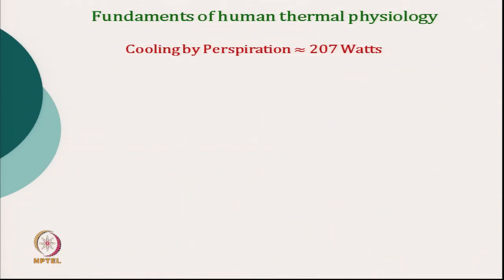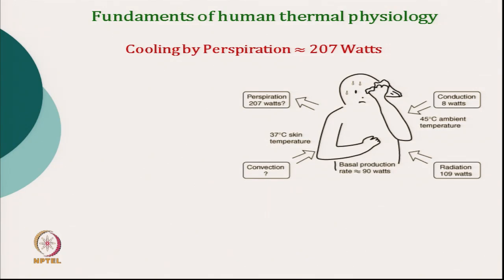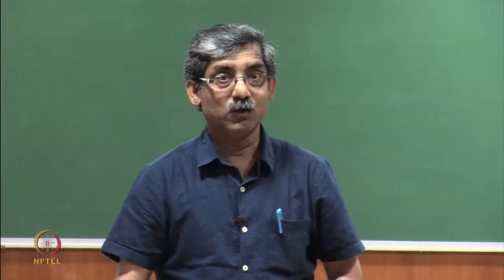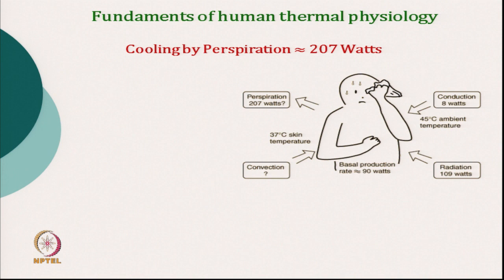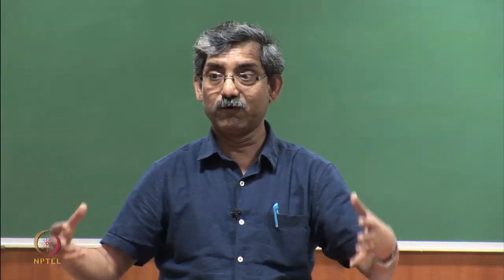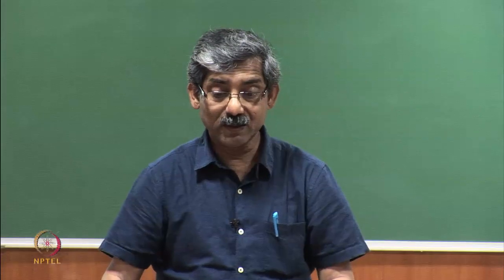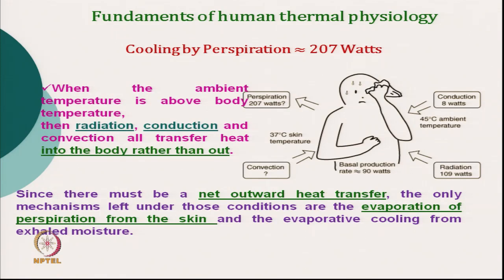After radiative heat, the main activity is cooling by perspiration. In the earlier case at room temperature of 23 degree Celsius, insensible perspiration is around 600 grams per day. But when temperature becomes 45 degree Celsius and people start sweating, the total fluid or moisture transmission will be approximately 7.5 liters per day. When ambient temperature is above body temperature, radiation, conduction, and convection — all three common mechanisms — transfer heat to our body.